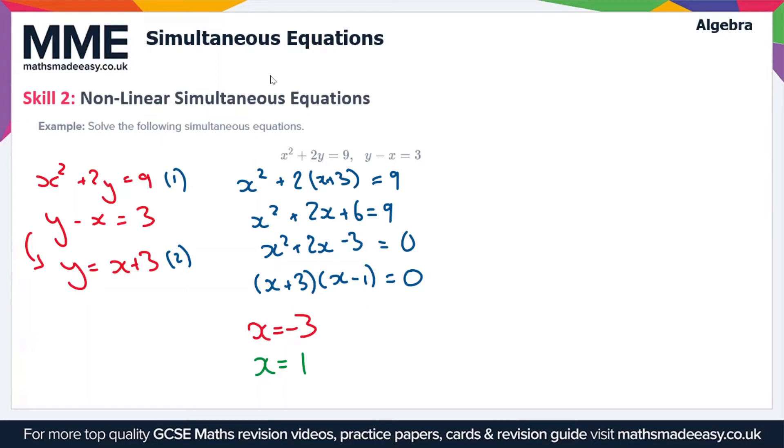Now we need to find the corresponding y values. When x = -3, y = x + 3, so y = 0. One solution is x = -3, y = 0. The other solution: when x = 1, y = x + 3, so y = 4.